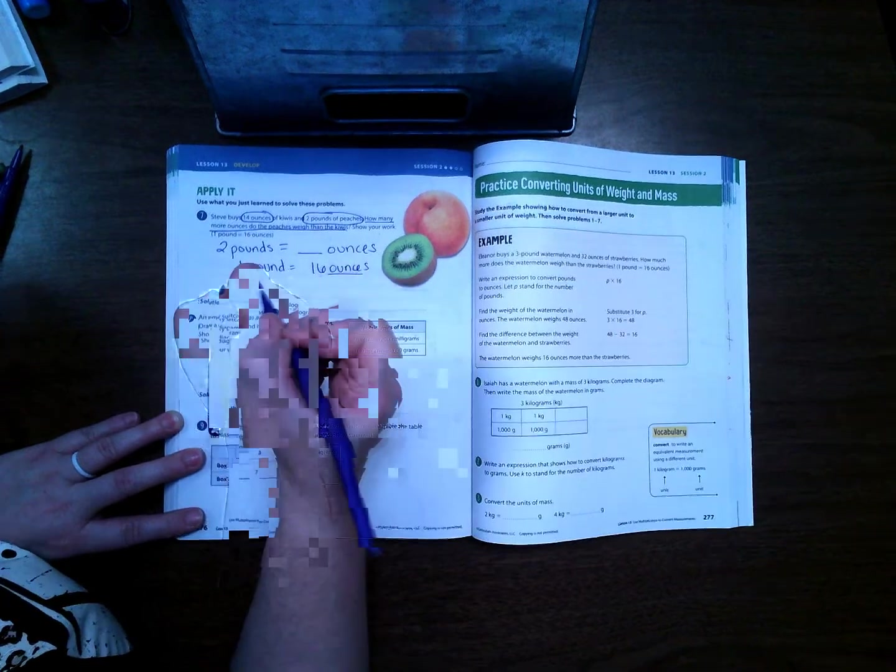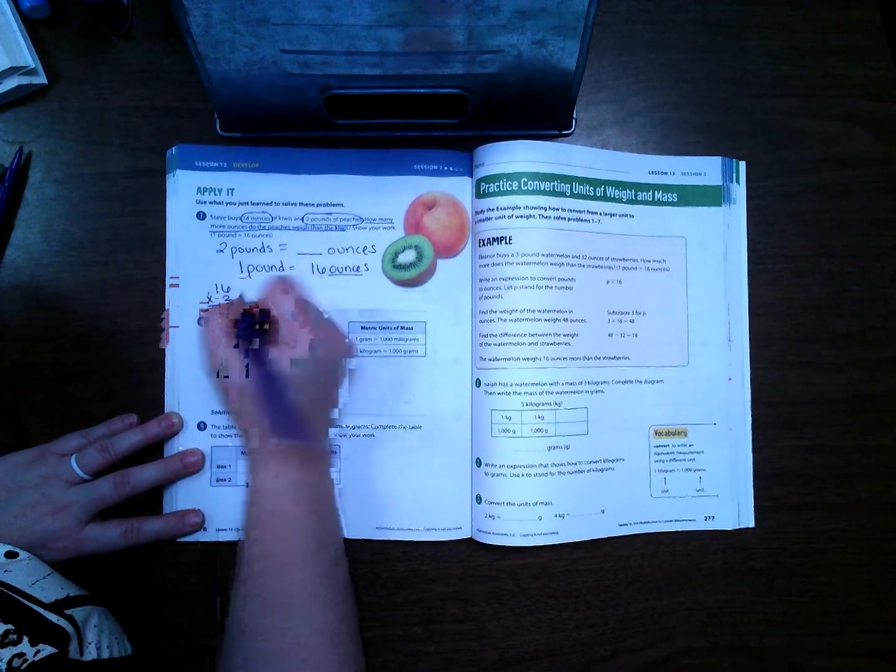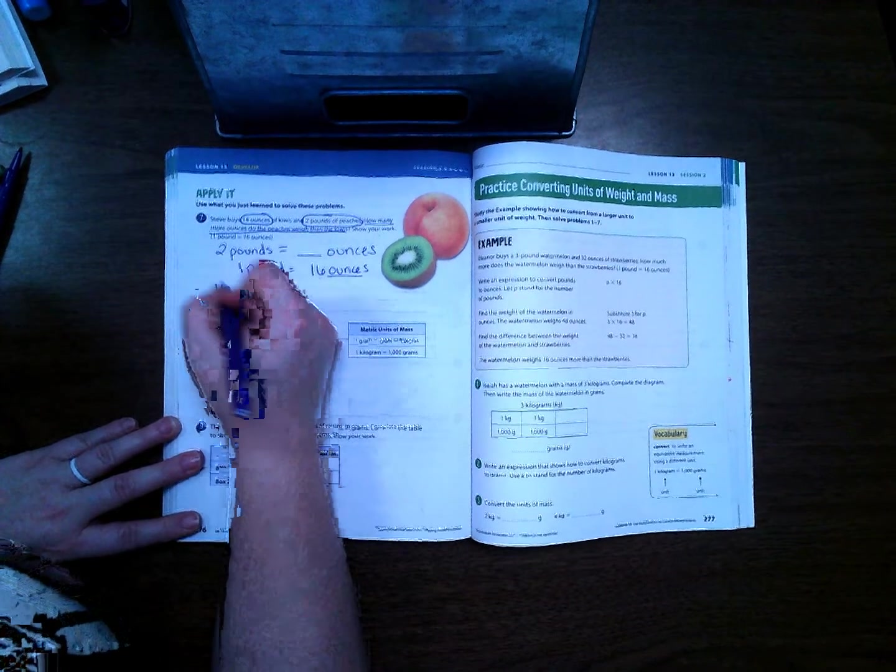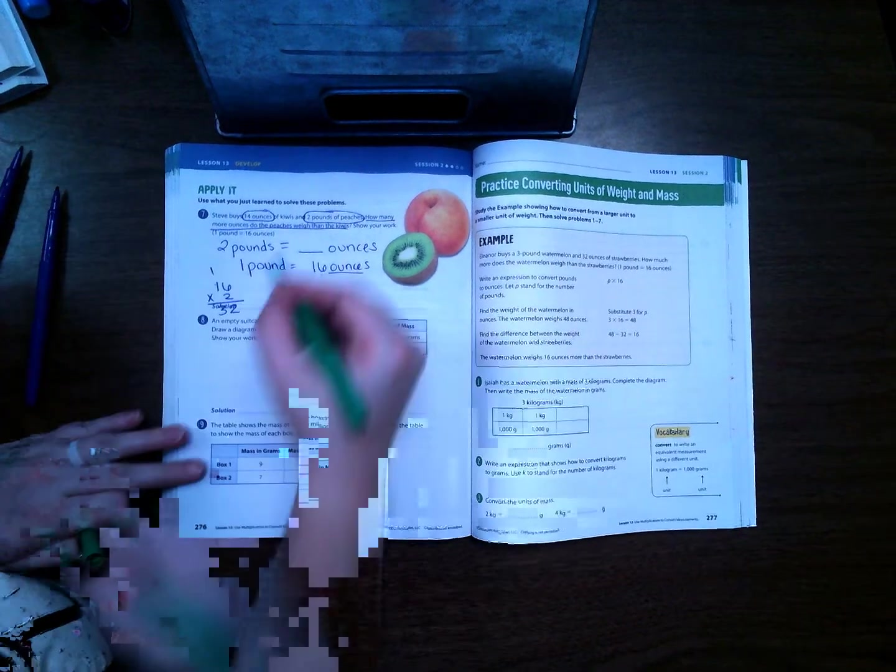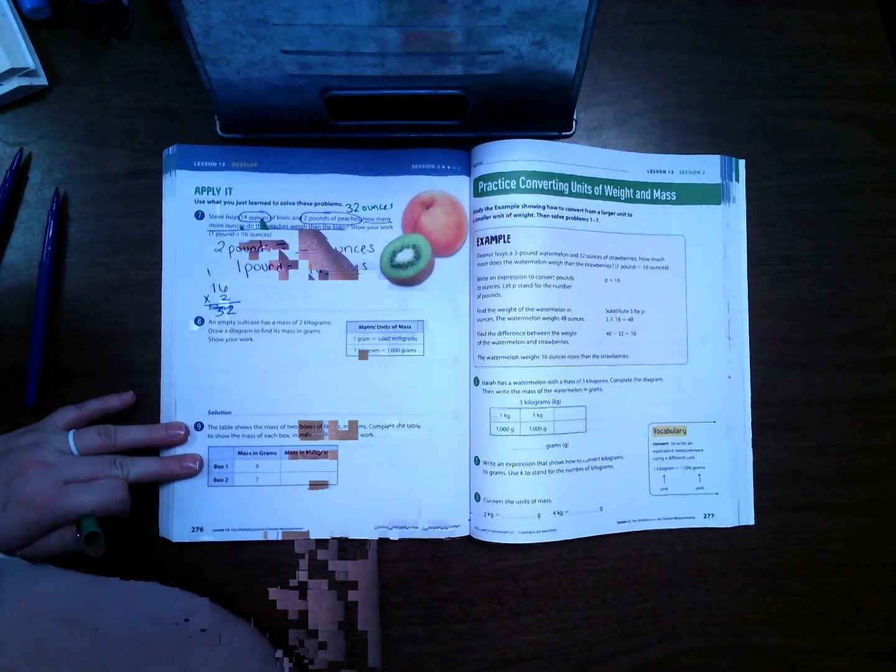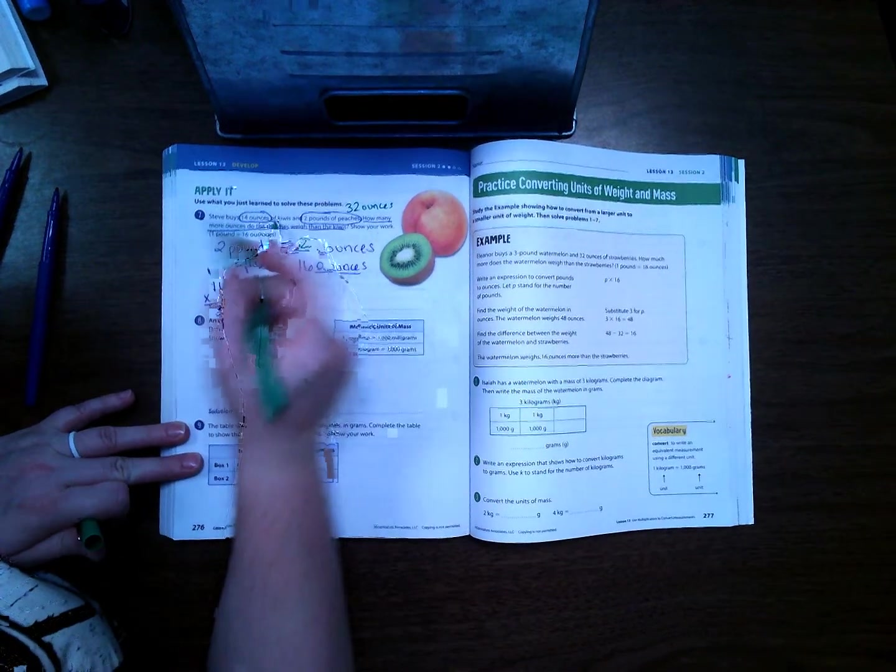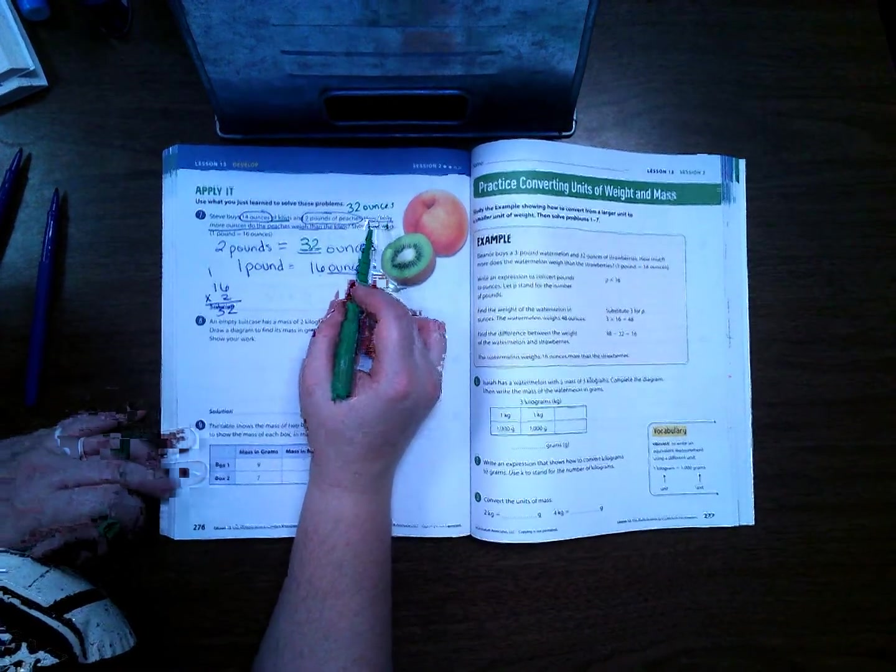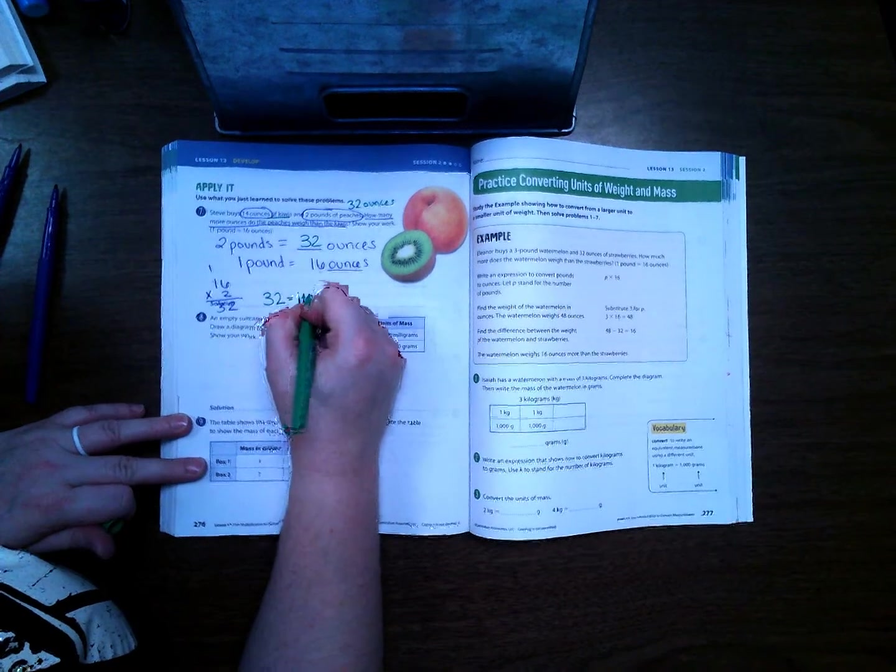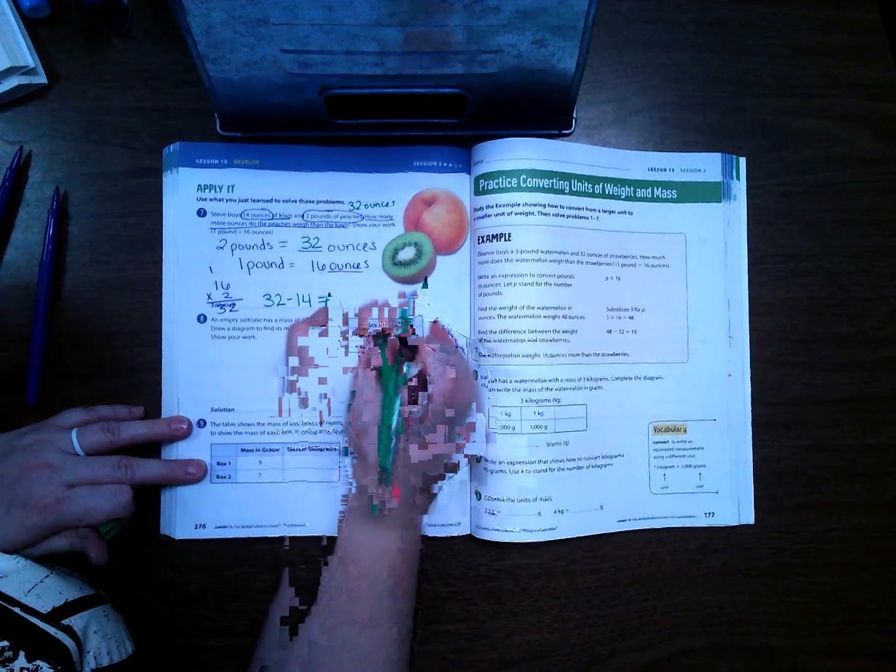So I'm going to take 16 times 2 to get my answer. 6 times 2 is 12, 2 times 1 is 2 plus 1 more is 32. So 32 ounces is how much the peaches weigh, and 14 ounces is how much the kiwis weigh. But that's not my question. It says how many more ounces do the peaches weigh than the kiwis, so then I have to do 32 minus 14 to get my actual answer.